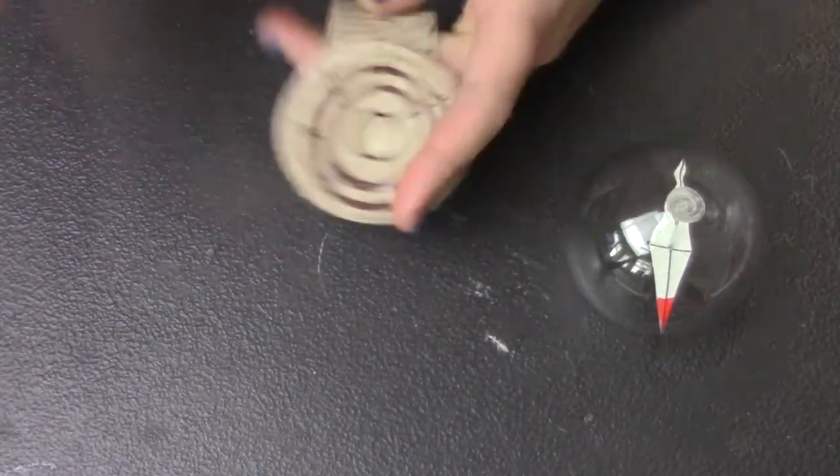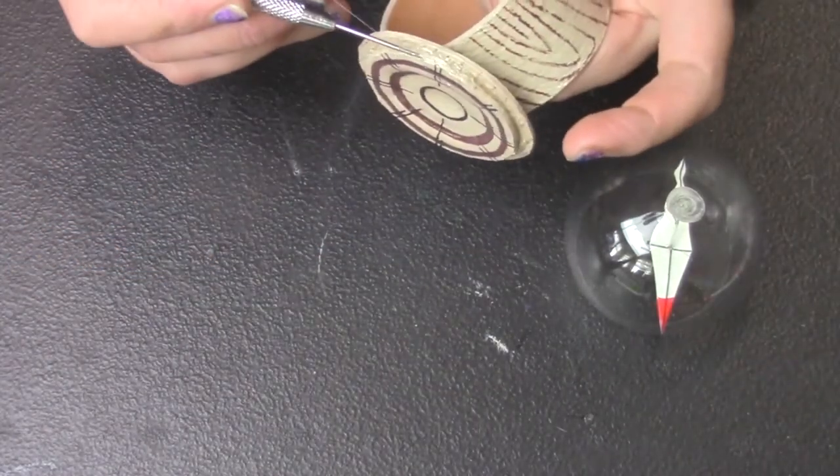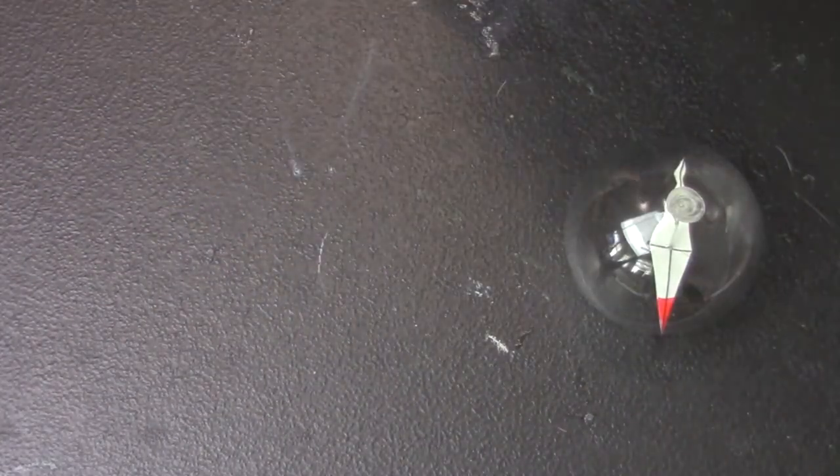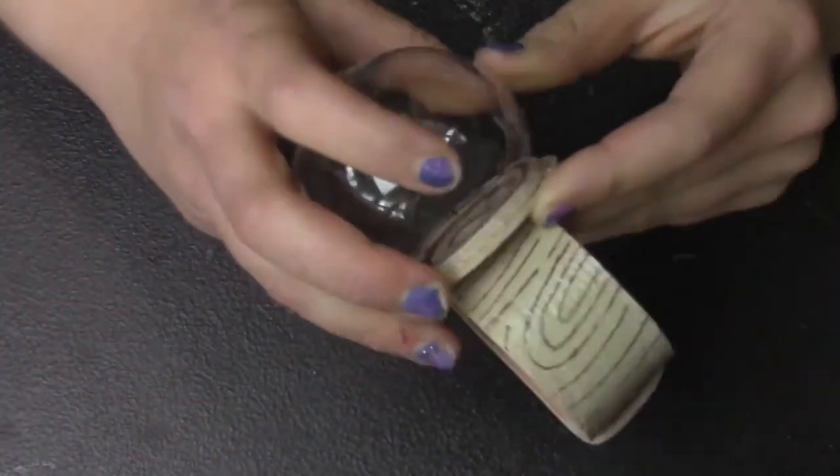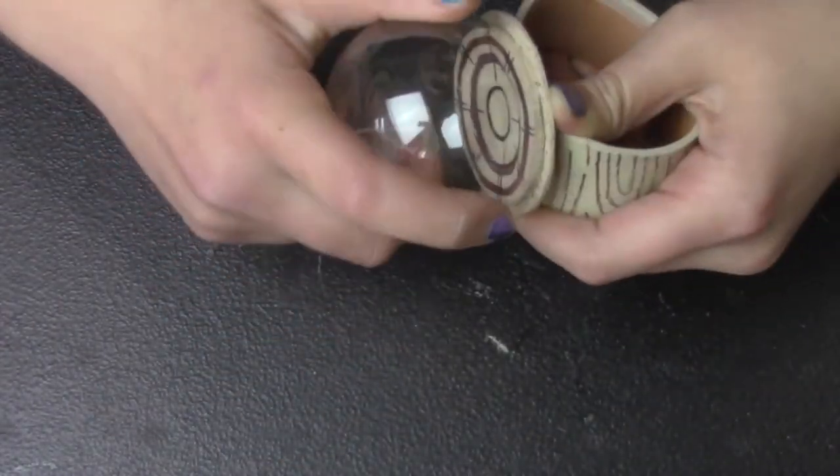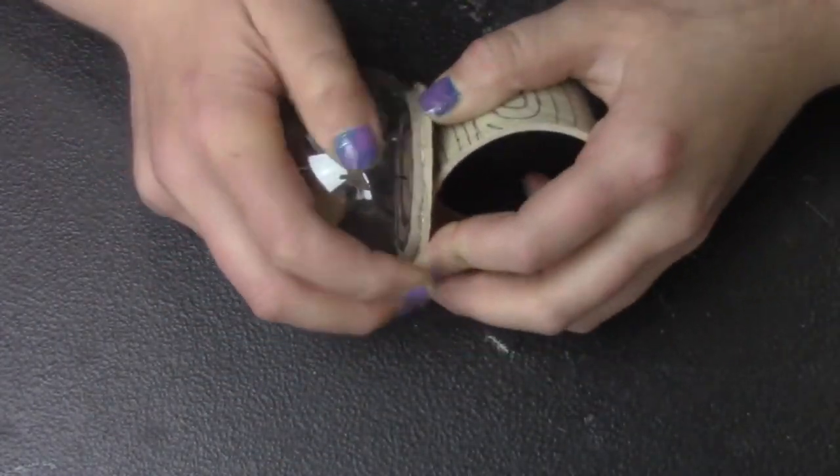So now you're just going to take your wristband, which should be dry by now, and add some E6000 to the outside of the center pieces. Then go ahead and add your dome shape to that. It should fit around the inner circles.